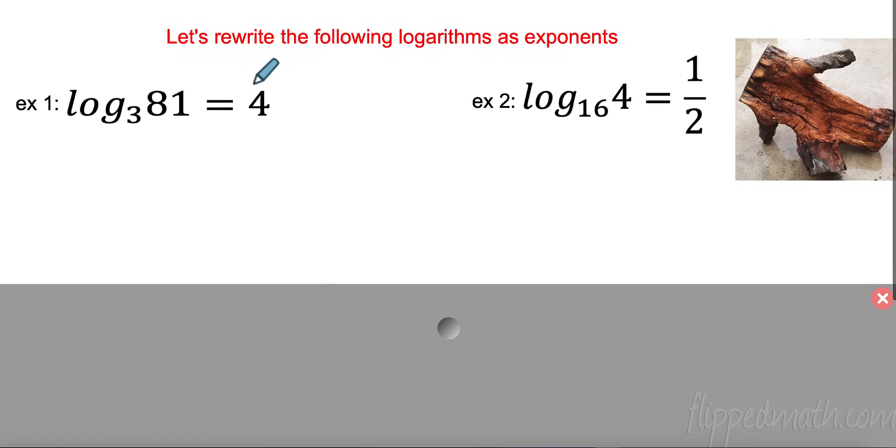Let's take a look at this and rewrite these as exponents. This is log base 3 of 81 equals 4. I like saying base 3, because it helps me. That means my base is 3, and my exponent is 4, because it's how many 3s do I need to get to 81? I need 4 of them. So 3 to the 4th power equals 81. Here I have base 16, so 16 to the exponent of 1 half equals 4. Fractional exponents, the bottom is the root. So this is the same thing as the square root of 16 equals 4.